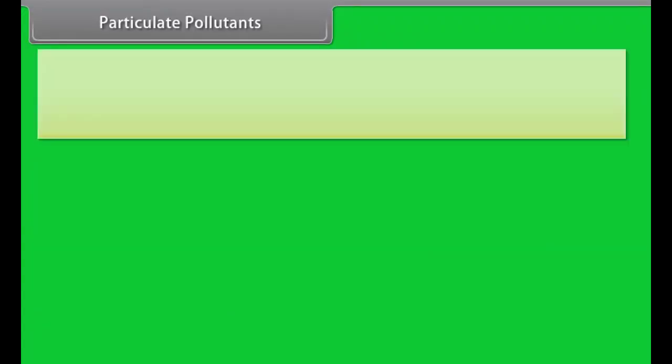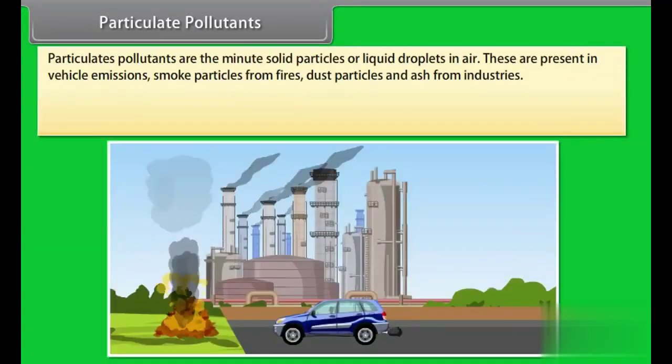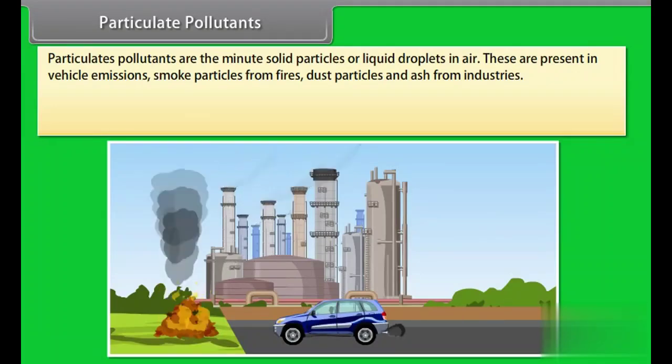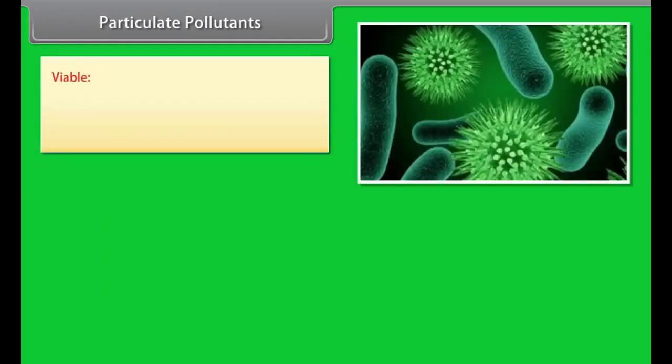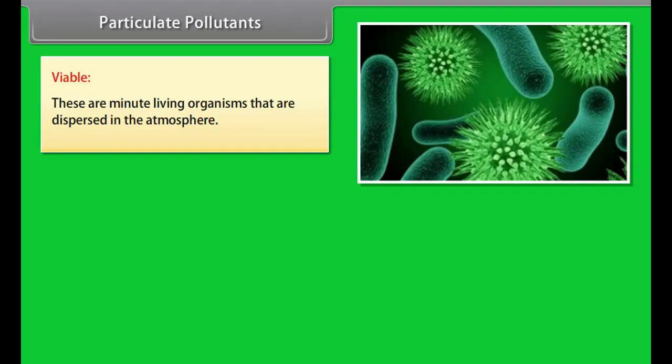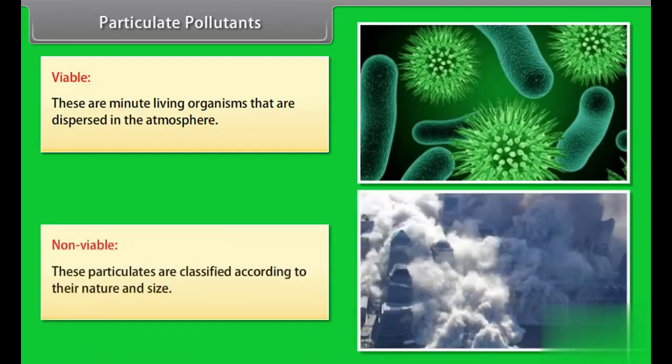Particulate pollutants are the minute solid particles or liquid droplets in air. These are present in vehicle emissions, smoke particles from fires, dust particles, and ash from industries. Particulates in the atmosphere are of two types: viable and non-viable. Viable: These are minute living organisms that are dispersed in the atmosphere. Examples: bacteria, fungi, molds, algae, etc. Non-viable: These particulates are classified according to their nature and size.